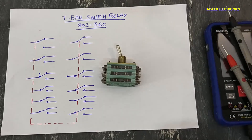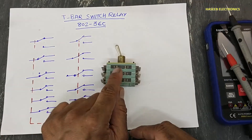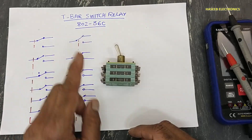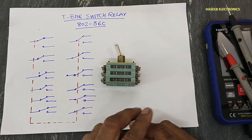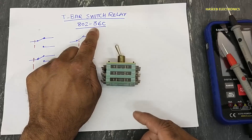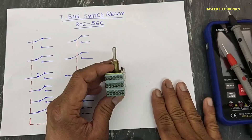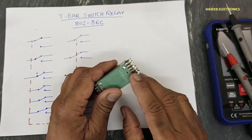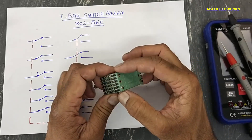Friends, welcome back to my channel. I have this T-bar switch — it is switch relay 36C, meaning it has 36 contacts, single pole double throw. If it is 24C that is 24 contacts; 12C means 12 contacts. It has three stage contact sets, and each stage has 12 single pole double throw switches: 6 here and 6 here.